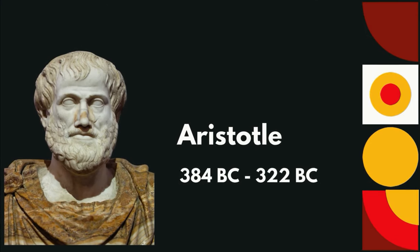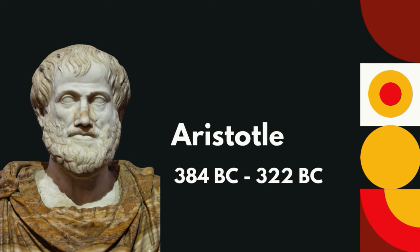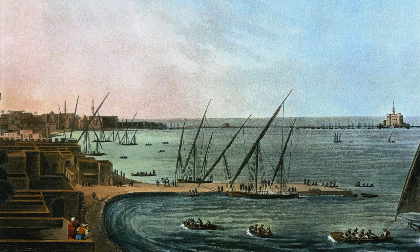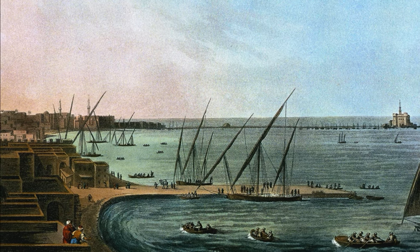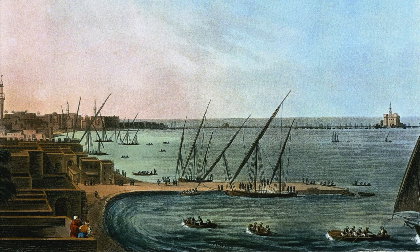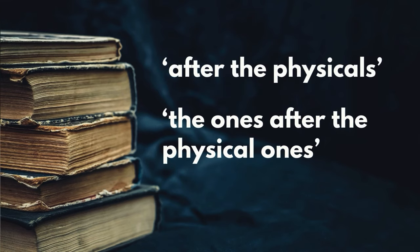The term metaphysics comes from Aristotle, although he was unfamiliar with the term itself and referred to its subject matter as first philosophy. Around the first century BC, in the ancient city of Alexandria, a collection of 14 books by Aristotle, all which dealt with this first philosophy, were translated and published. They were given the title after the physicals or the ones after the physical ones.